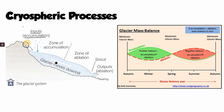Over time, that snow squashes down on the snow below it, and the next year's snow squashes down on top of that. Very slowly the air is squeezed out until you're left with really solid ice. That glacial ice moves downhill and eventually will melt.